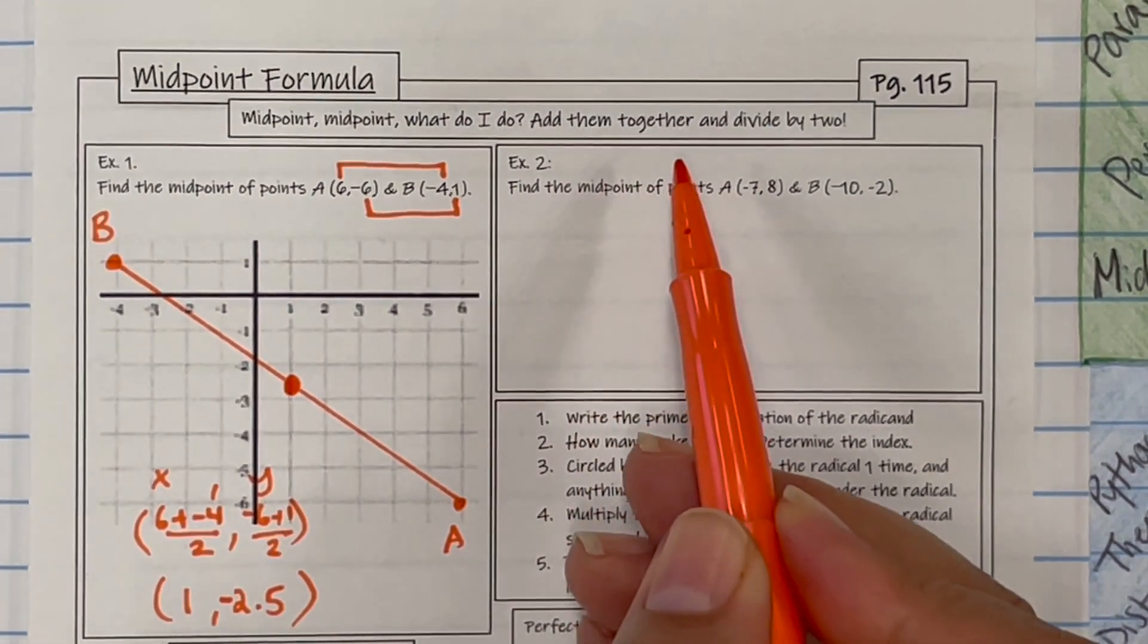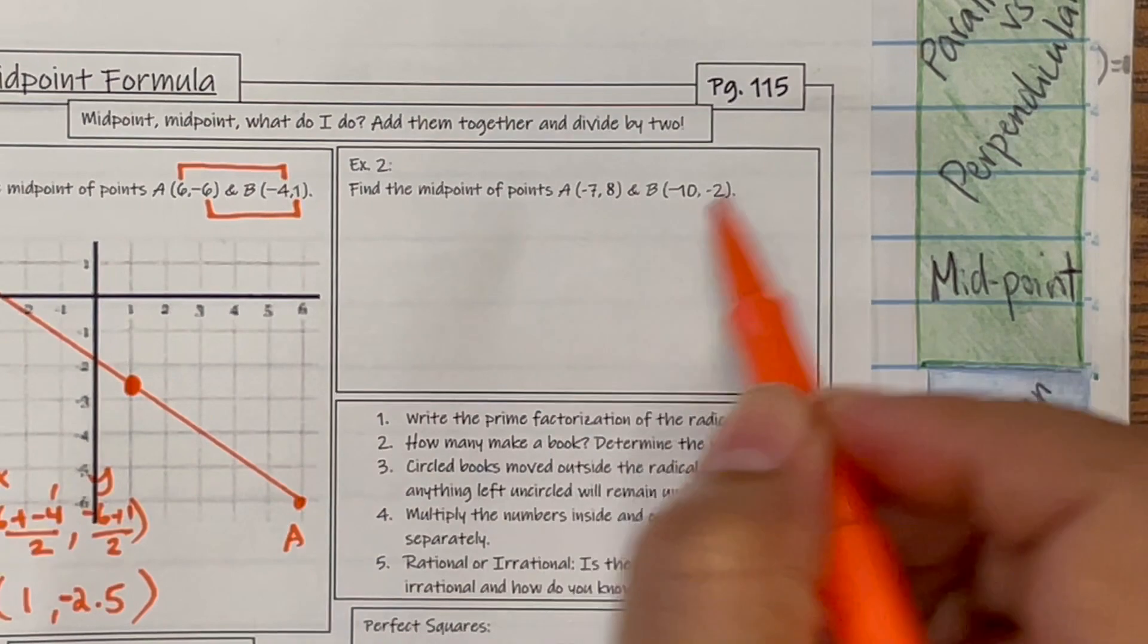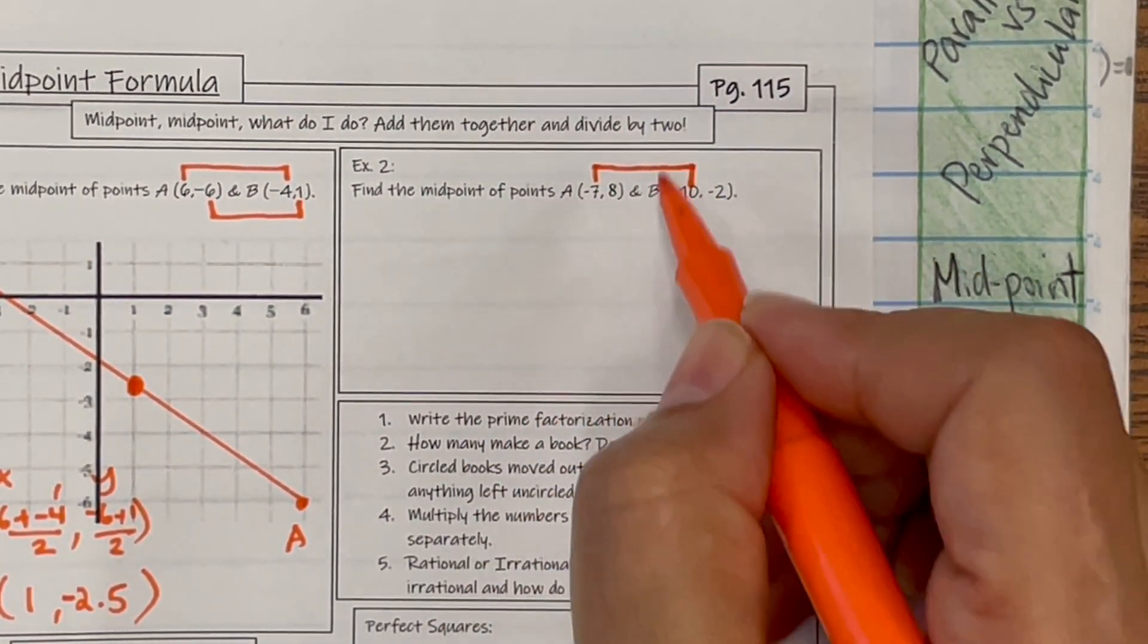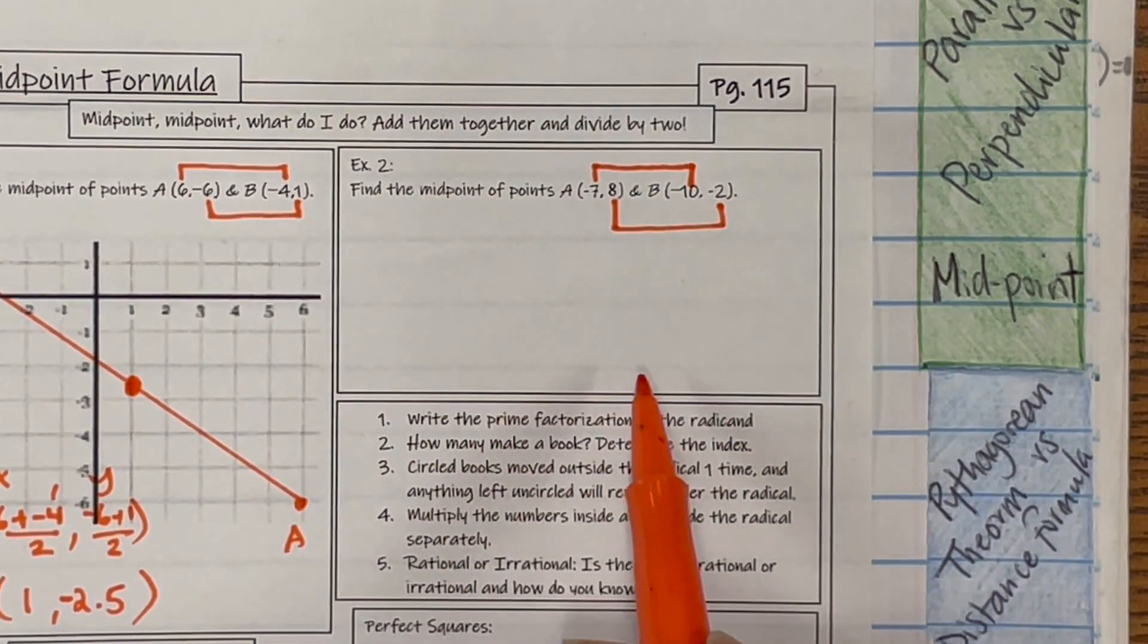Midpoint, midpoint, what do I do? Add them together and divide by 2. All right, so it doesn't matter if I don't give you a graph. What are you doing? Add the X's and divide by 2, add the Y's and divide by 2. Please show me the work and the answer here.